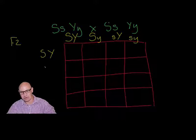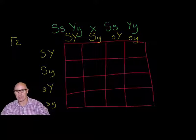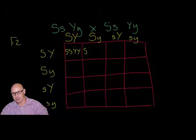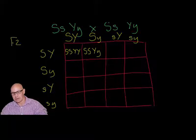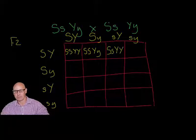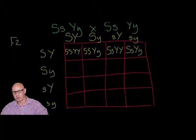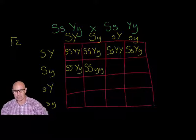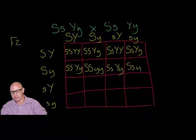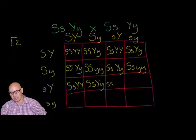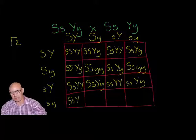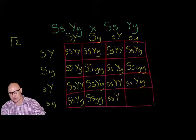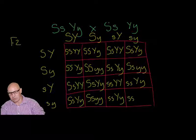Now we fill in the Punnett square systematically. The combinations are: SSYY, SSYy, SsYY, SsYy; then SSYy, SSyy, Ssyy — wait, let me be systematic. Going through each box: capital S capital S capital Y capital Y; capital S capital S capital Y small y; capital S small s capital Y capital Y; capital S small s capital Y small y; capital S capital S small y small y; capital S small s small y small y; small s small s capital Y small y; and finally small s small s small y small y. It's a lot, but it's important to do this systematically.